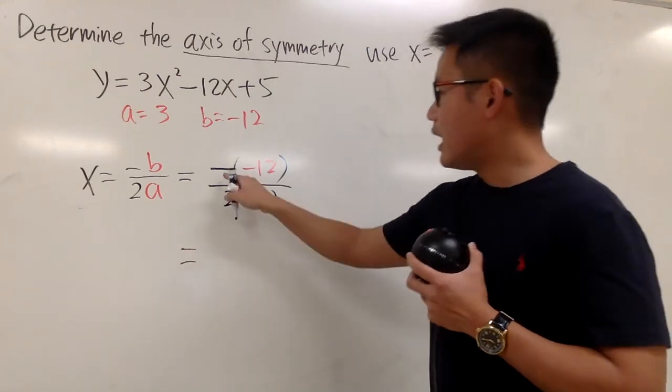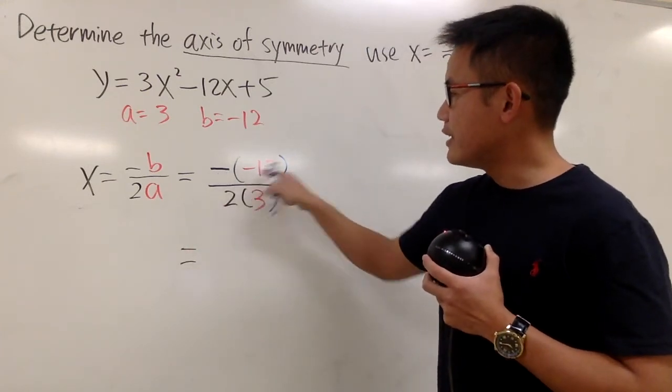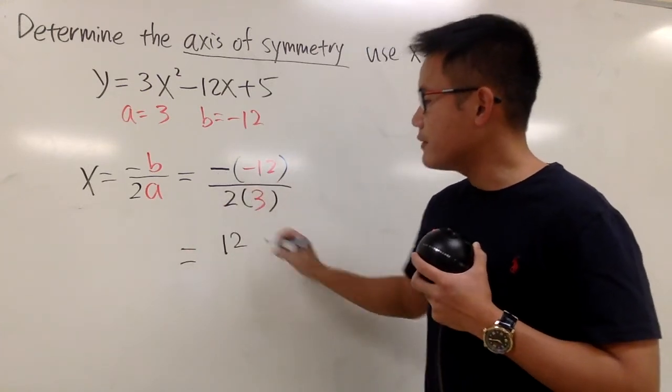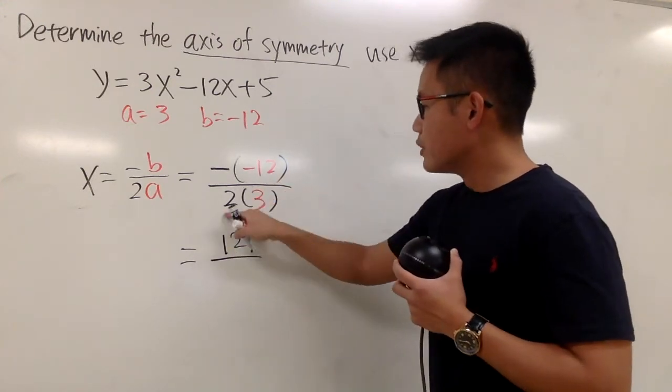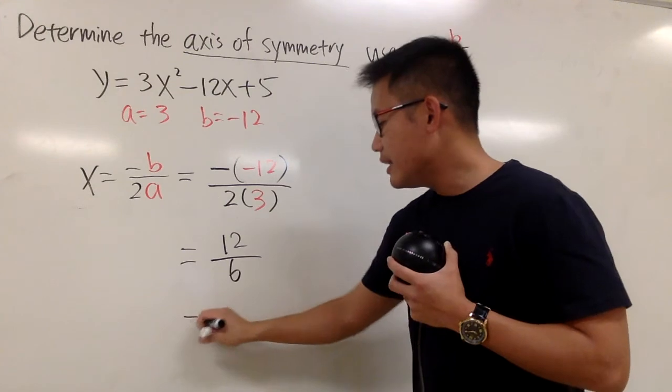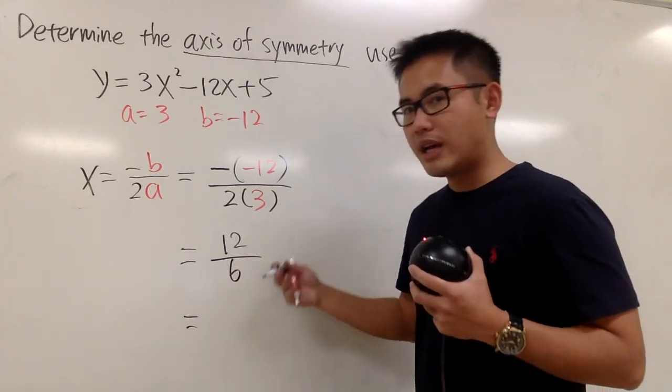And now we can just work this out. On the top, this is negative negative 12, so it turns out to be positive 12. Negative times negative is positive 12, right? Over 2 times 3, we get 6. And in the end, 12 divided by 6, we get 2.